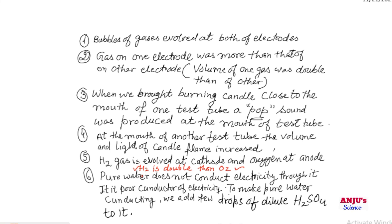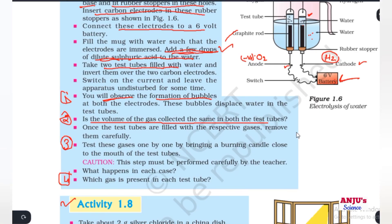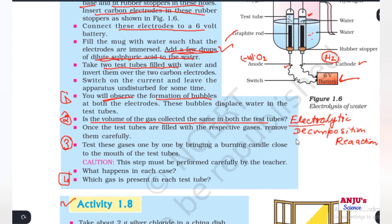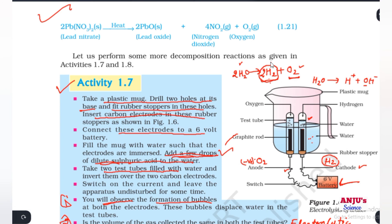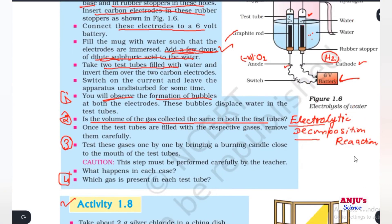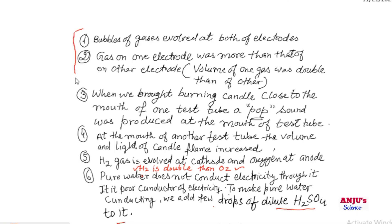Pure water does not conduct electricity, so it is a poor conductor. To make pure water conducting, we add a few drops of dilute sulfuric acid to it. This reaction is an example of an electrolytic decomposition reaction — 'electrolytic' means by electricity, and 'decomposition' means breaking down into smaller products. Here, one reactant, water, decomposes into hydrogen and oxygen with the help of electricity. These were the observations of this activity. I hope you understood it very well. Thanks for watching.